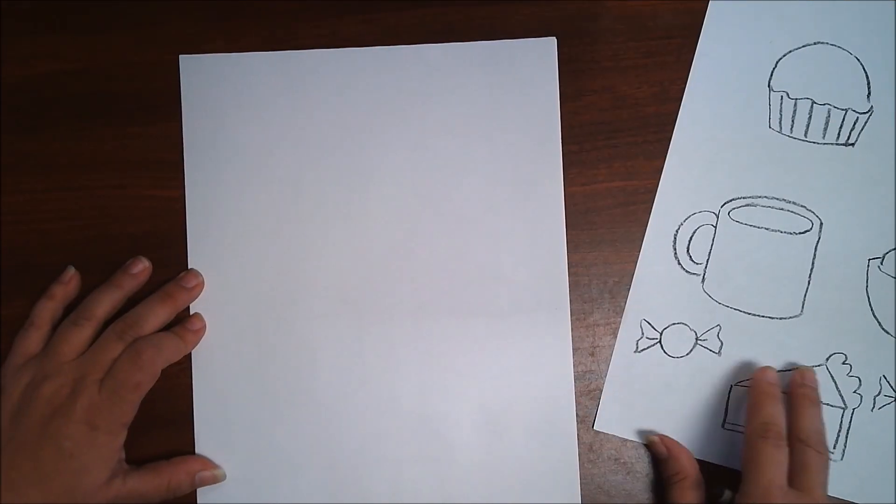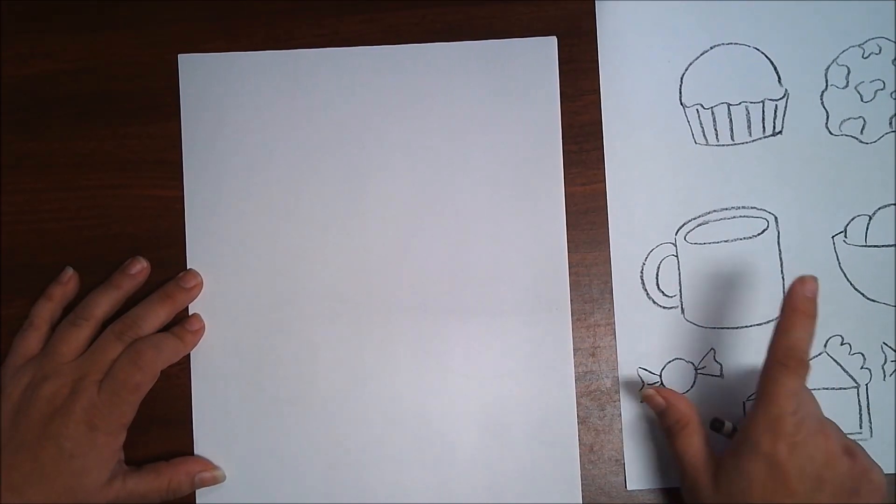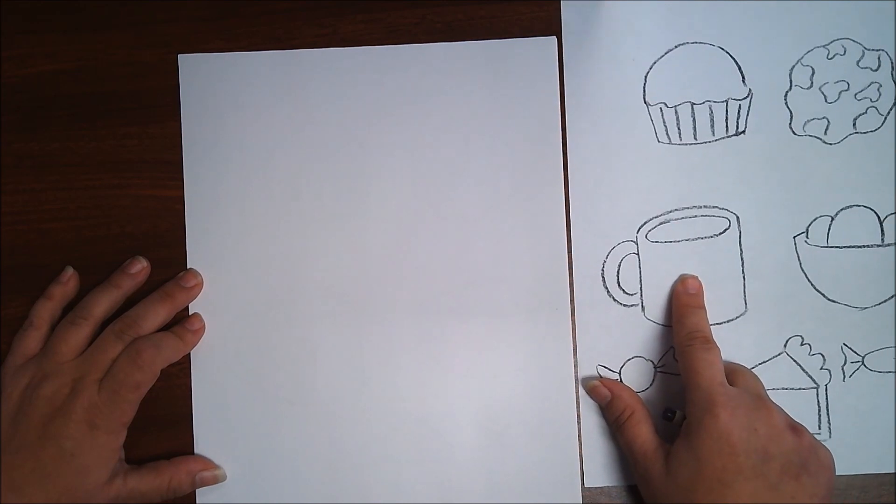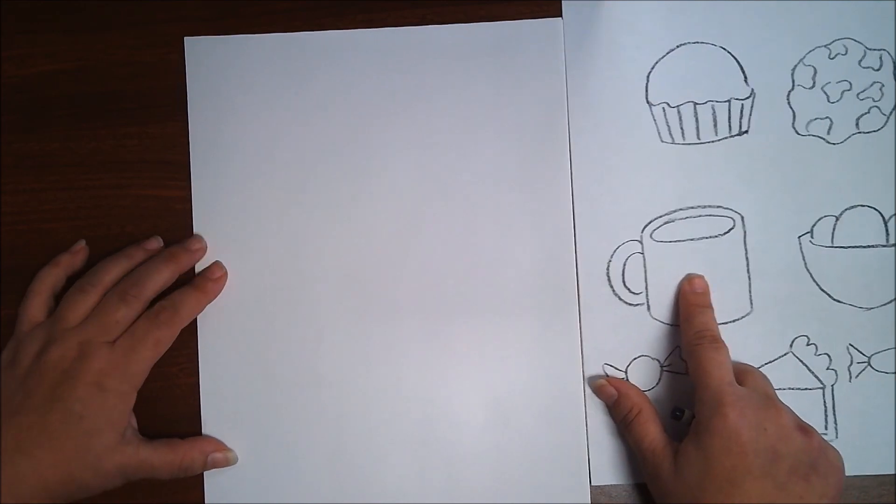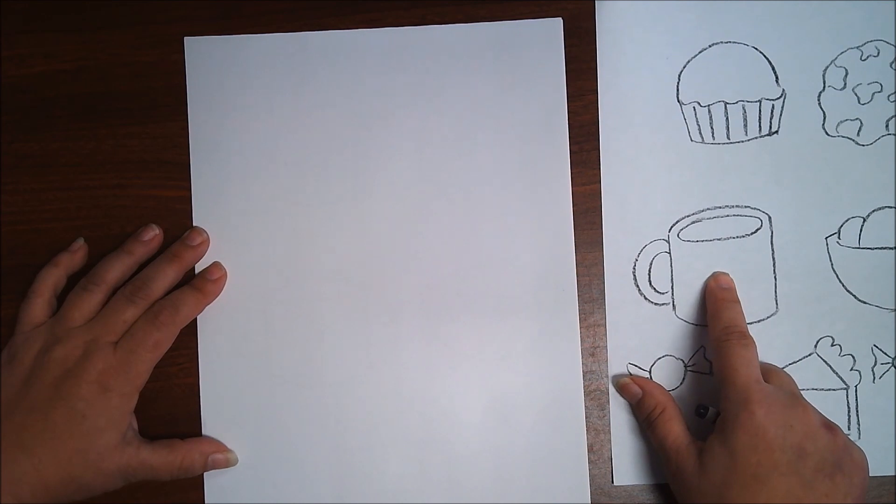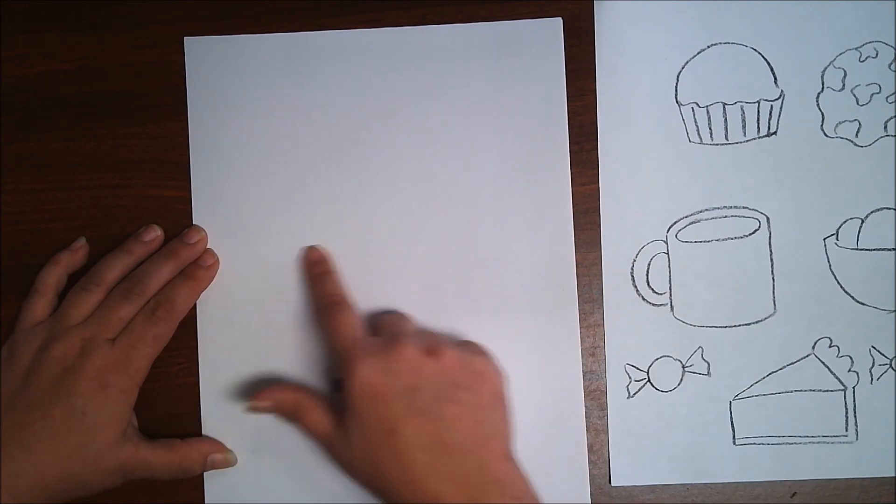And what I want to do is I want to do this mug and get this out of the way. The mug and the ice cream are probably the toughest. So let's go ahead and get those done. And what I want to do is kind of be on the middle of my paper.